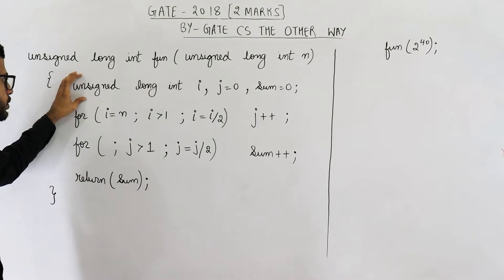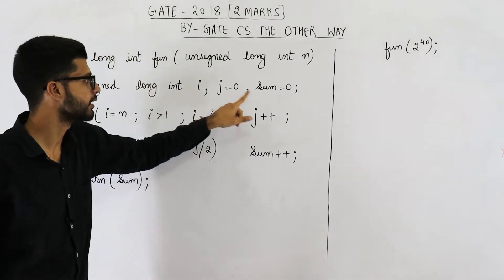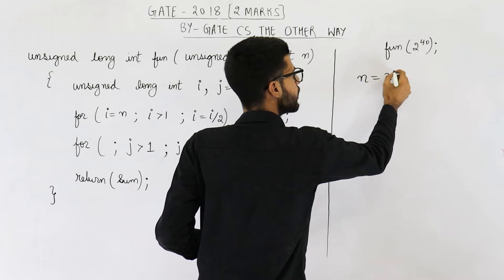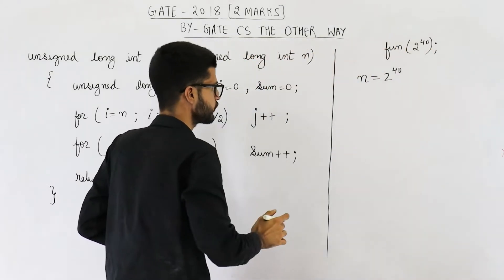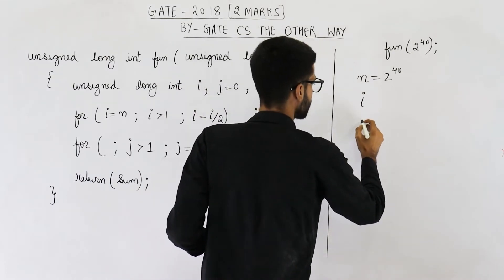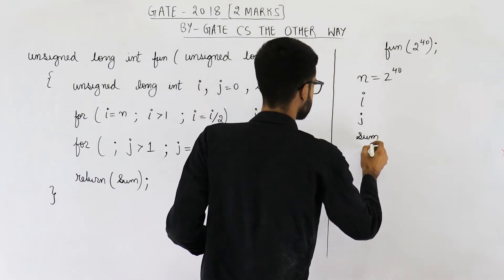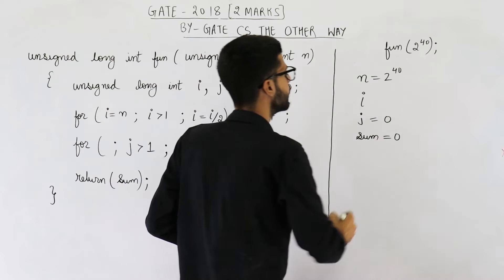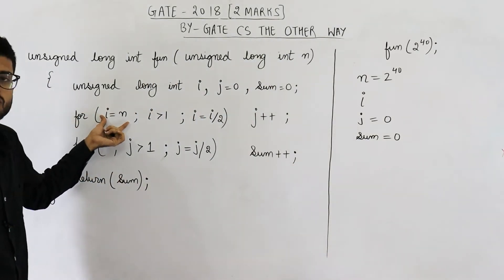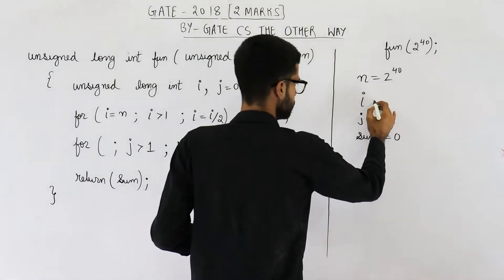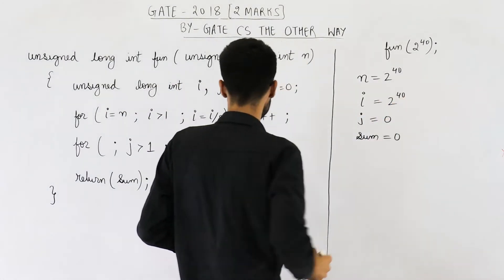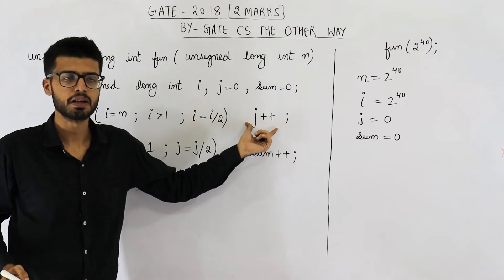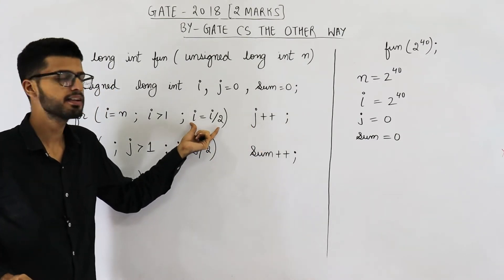The first line of this program declares unsigned long integer i, j, and sum. n is assigned 2 to the power 40 because we passed 2 power 40. Then i, j, and sum will be declared, and j and sum will be initialized with value 0. In the next line there is a for loop: i is initialized to n, so the initial value of i will be 2 power 40. The condition is i greater than 1, and the body of the loop is j plus plus, with update expression i equals i divided by 2.